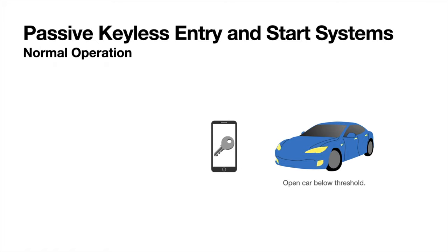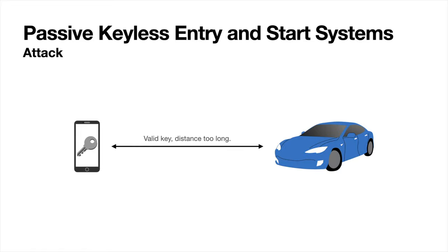Using HRP Ultra Wideband, this is even possible in complex non-line-of-sight scenarios, for example a smartphone inside a pocket. HRP Ultra Wideband uses secure cryptographic primitives and measures the time of flight of a signal. This prevents known attacks such as relaying and amplifying a car key signal.